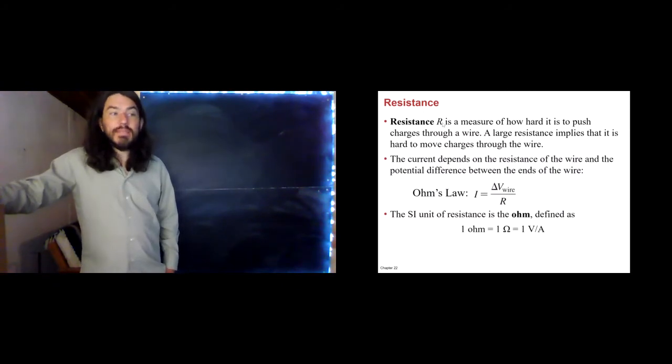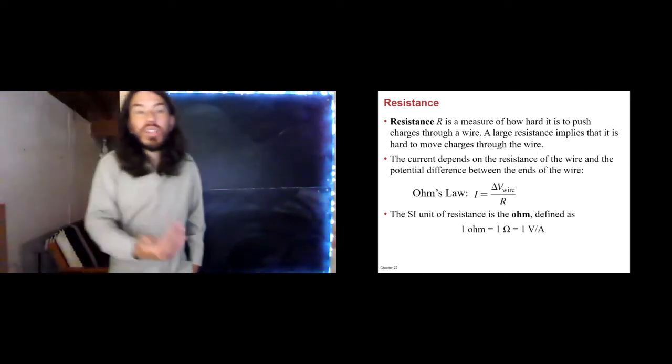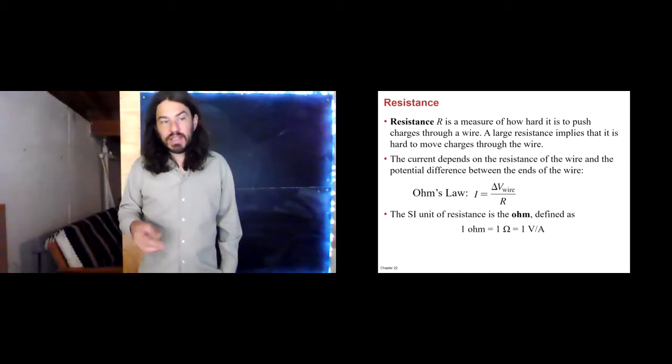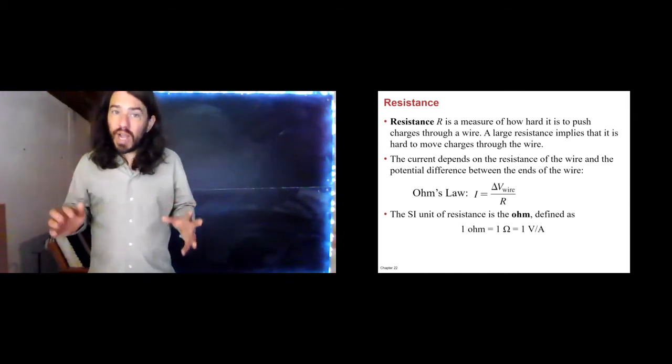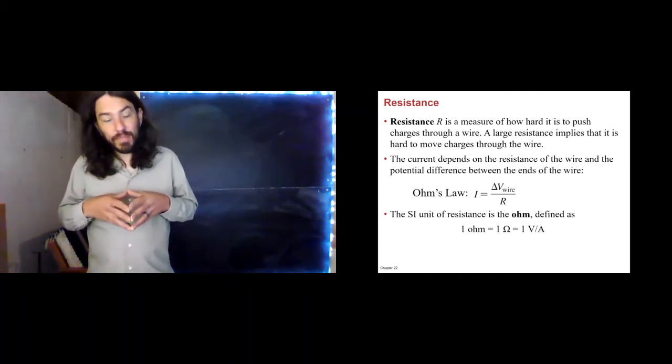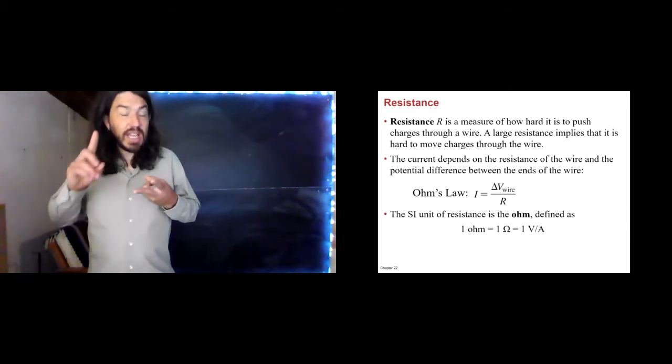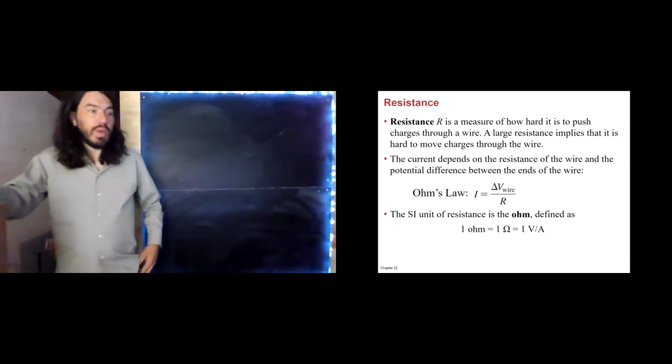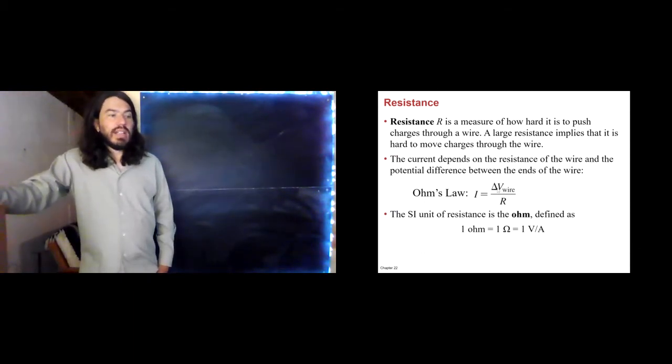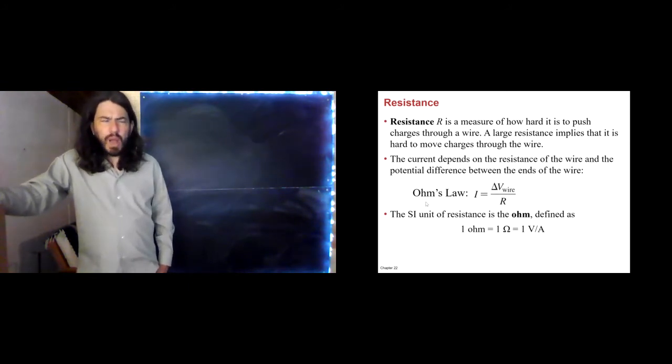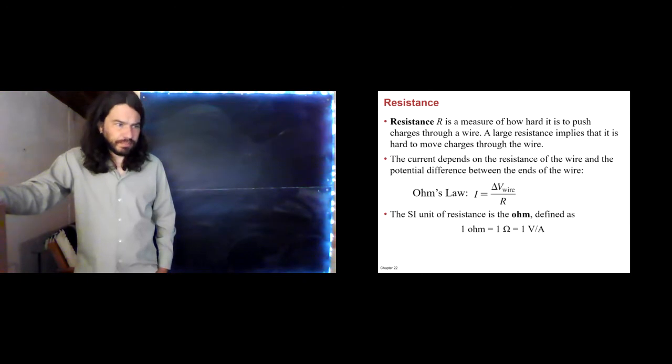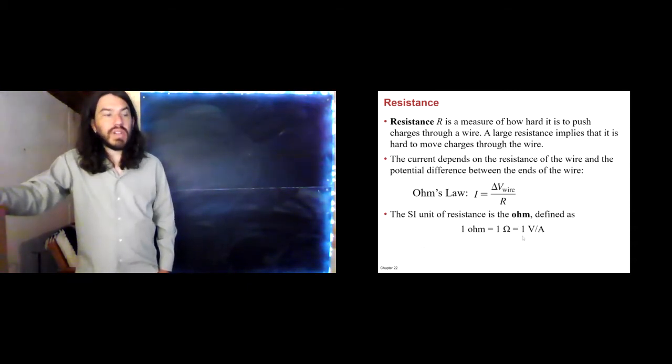So, resistance is a measure of how hard it is to push charges through a wire. We use the symbol R for that. A large resistance implies that it is hard to move charges through the wire. And a small resistance implies that it is easy. The current depends on the resistance of the wire and the potential difference between the ends of the wire. It takes a potential difference to drive that current. The resistance determines how much current we get. And delta V over R is I. We call this Ohm's Law. It's possibly the most important equation for the next series of chapters. And it defines a relationship between current potential and resistance. The unit of resistance is the Ohm, which is defined as a volt per amp. And we use this capital omega as our symbol.